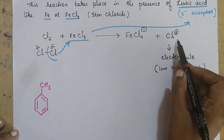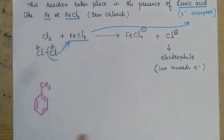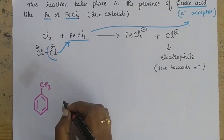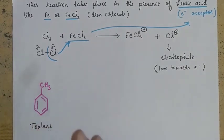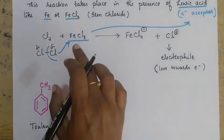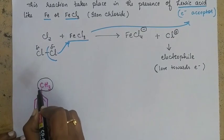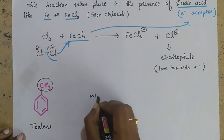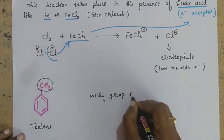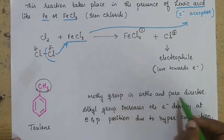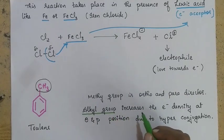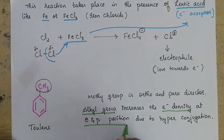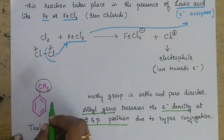Cl⁺ is the electrophile which has a love towards electrons, so it gets attracted toward positions where electron density is high. In this reaction we are going to consider toluene as the main reactant. Toluene has a methyl group directly attached to benzene. You need to remember that methyl group is ortho and para directing. This alkyl group increases the electron density at ortho and para positions through hyperconjugation.